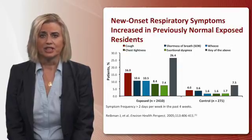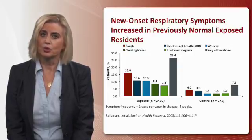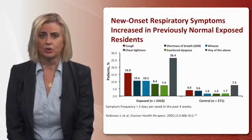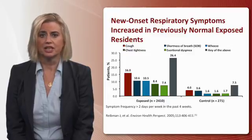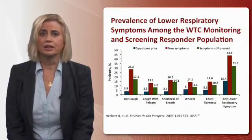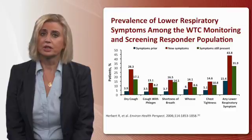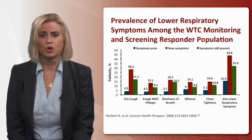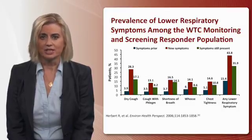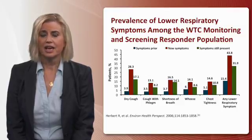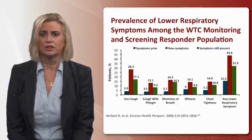The survivor population — including building reoccupants, local residents, school children, and those who lived in Lower Manhattan — had symptoms related to cough, wheeze, dyspnea on exertion, chest tightness, and sinus and nasal problems. The prevalence of lower respiratory tract symptoms among World Trade Center responders included similar findings: cough, shortness of breath, wheeze, and chest tightness, and looking at any lower respiratory symptom combined, the rate was nearly 44%.